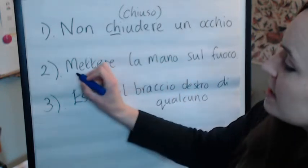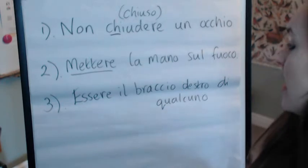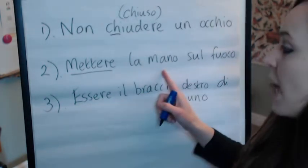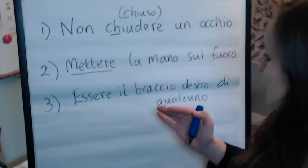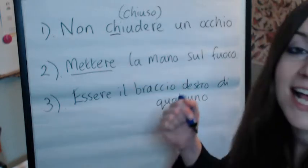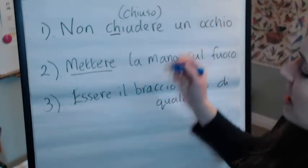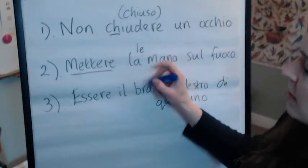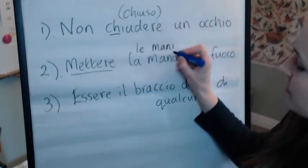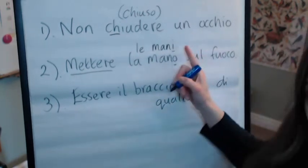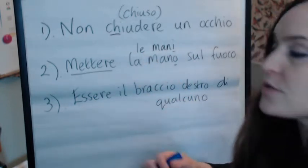Mettere is another -ere verb. La mano is feminine — la mano. In the plural this becomes le mani. This is a bit irregular in the plural — mano becomes mani, but it keeps the feminine plural article. Similarly, un occhio becomes gli occhi.